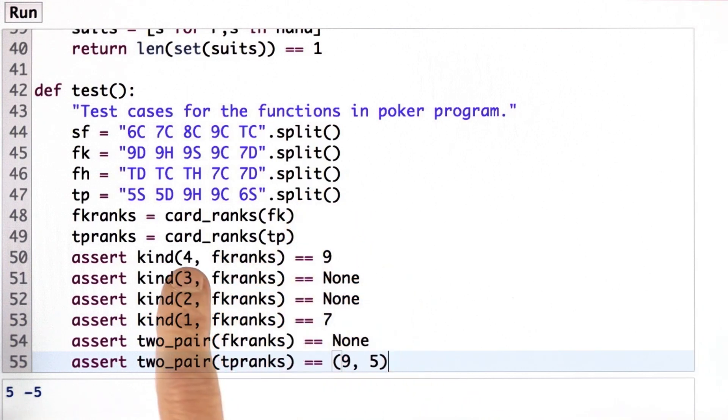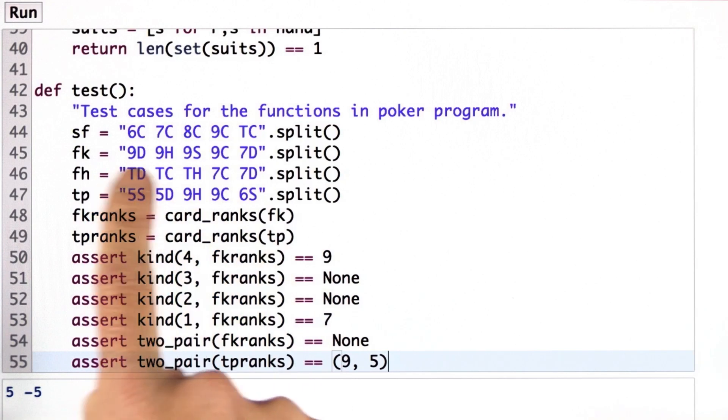And then I made these assertions. So is there a four of a kind in the four of a kind ranks? Yes, there is. And in fact, it's a nine. There's four nines. Is there a three of a kind there? No, there's not. We're asking for exactly three, not at least three. And so there's four, but there's not three.